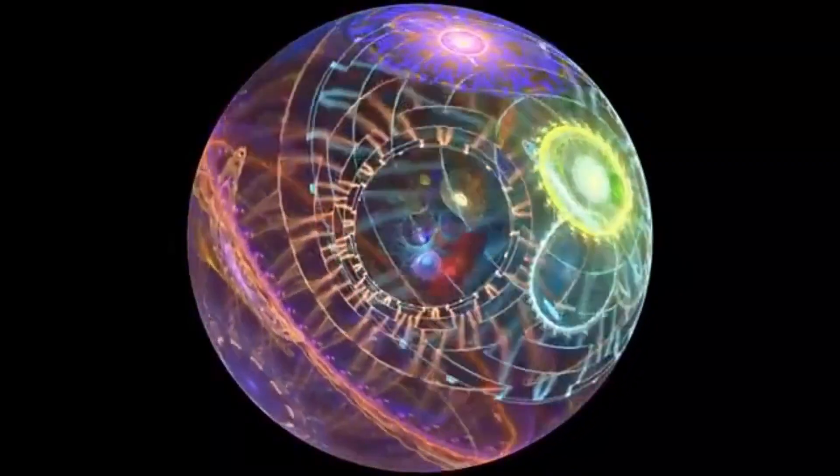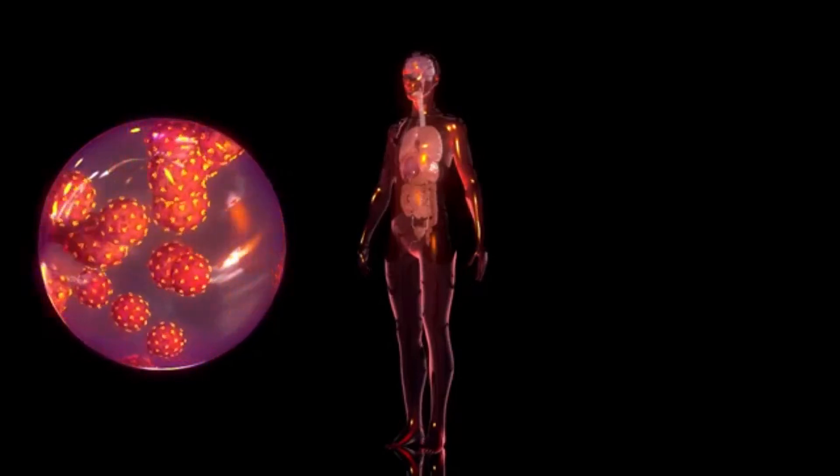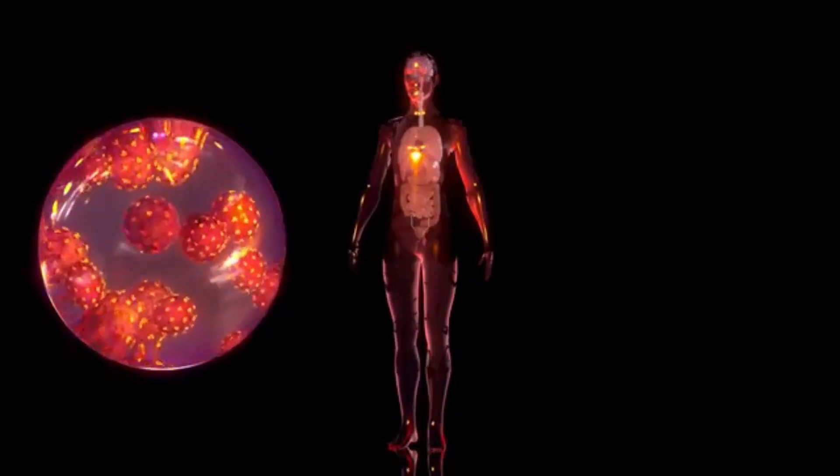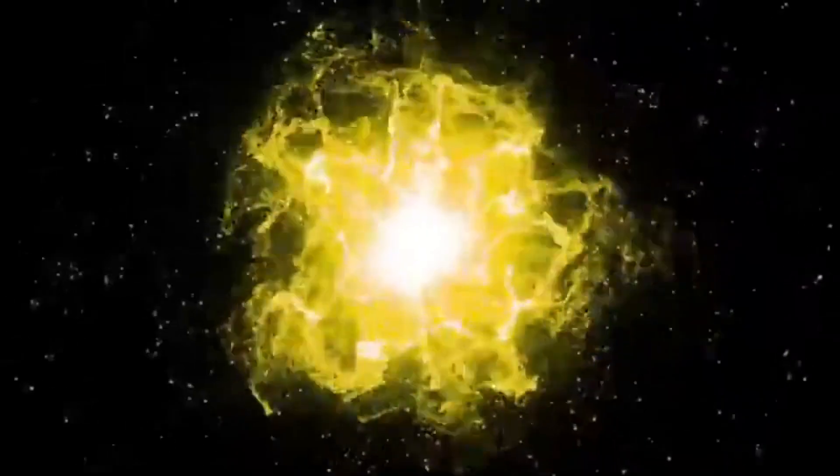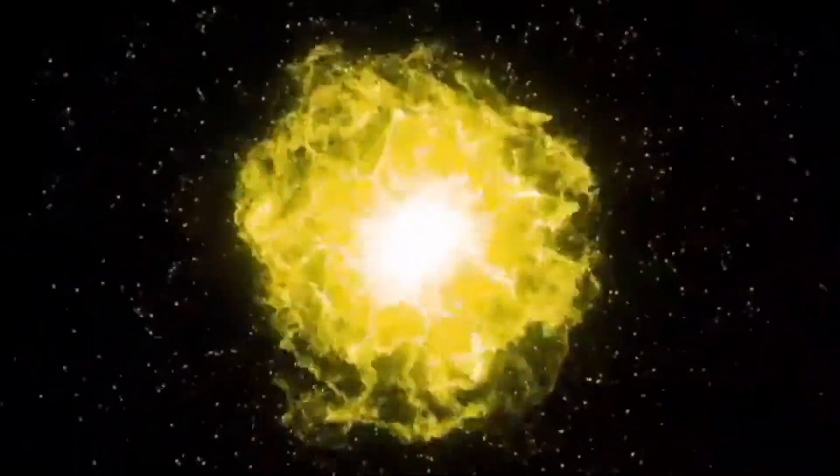The closest star system to us, Alpha Centauri, is 4.3 light-years away. Even traveling at the speed of light, it would take over 4 years to get there. Now imagine trying to reach Alpha Centauri using the same speed as the Voyager probe at 38,000 miles per hour. It would take about 70,000 years. These numbers reflect the staggering scale and isolation of star systems across the cosmos.